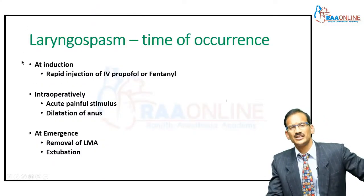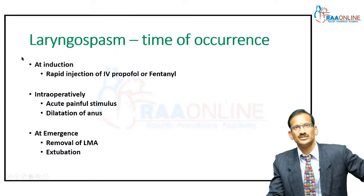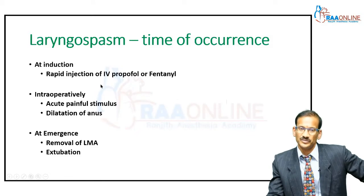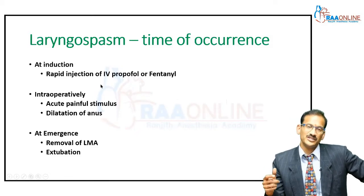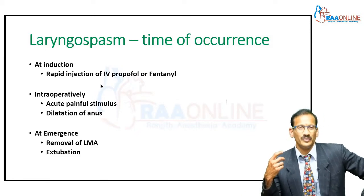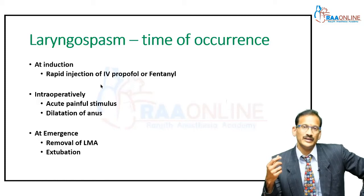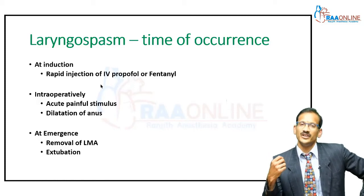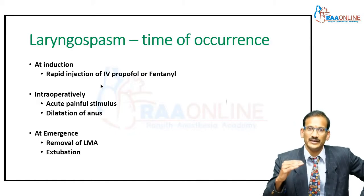There are various times at which laryngospasm can occur. At induction, when you have an IV in place and you're giving IV propofol rapidly or fentanyl rapidly, typically the child will cough and will become apneic.